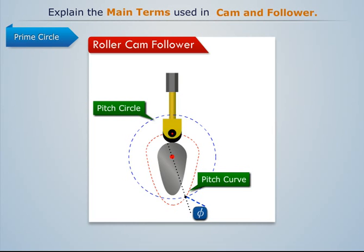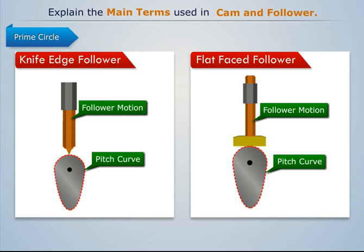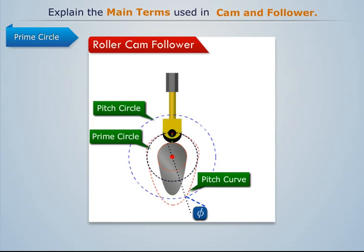Prime circle: it is the smallest circle that can be drawn from the center of the cam and tangent to the pitch curve. In the case of knife edge and flat face followers, the prime circle and the base circle are identical. For a roller follower, the prime circle is larger than the base circle by the radius of the roller.